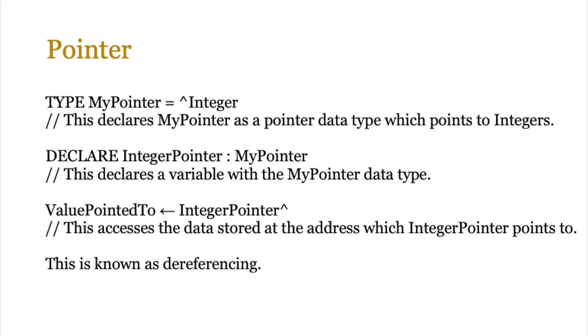Now, how do you declare a pointer? How do you define a pointer actually in pseudocode? You start off with the type command. The type MyPointer is going to be the pointer symbol integer. Now that pointer symbol or the hat symbol as it's known is quite vital because this identifies that this is a pointer data type that you're creating. So remember to include that in any pseudocode. Now, once you define the type of this pointer, so I've made a pointer called MyPointer, I can then declare any other variable as MyPointer. So in this case, the IntegerPointer is an instance of MyPointer. So I can use that as any other data type, just like string integer and so forth.